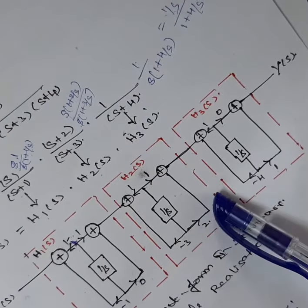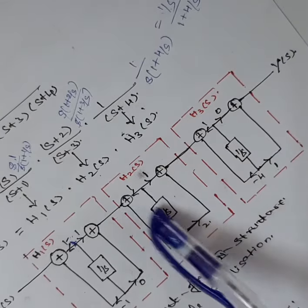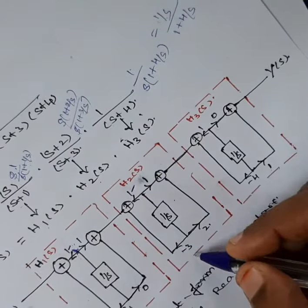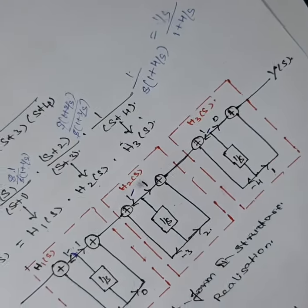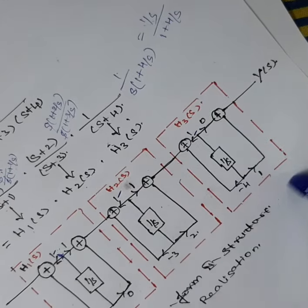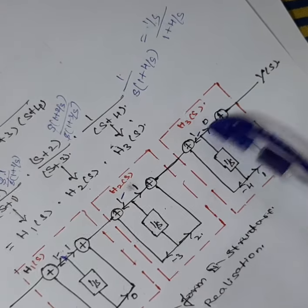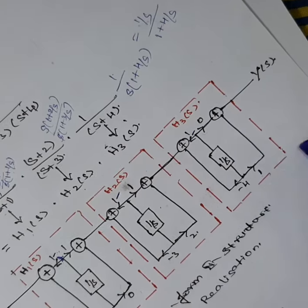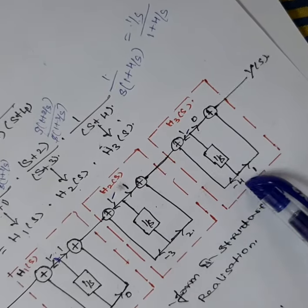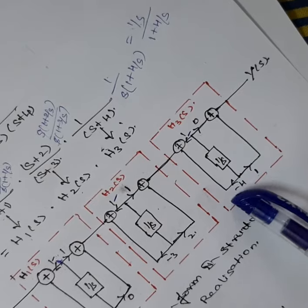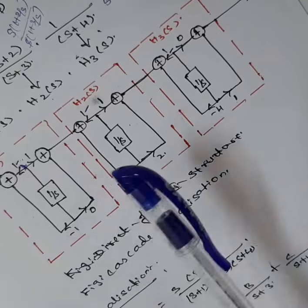For H2(s), the numerator values are 1 and 2. The denominator coefficients are minus 1 and minus 3 (opposite direction). For H3(s), the numerator constant term is 0 and the coefficient of 1/s is 1. The denominator constant term is 1 and the coefficient of 1/s is minus 4. This completes the cascade (series) realization.